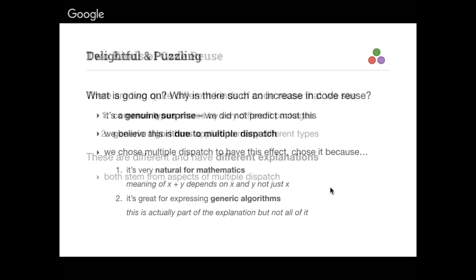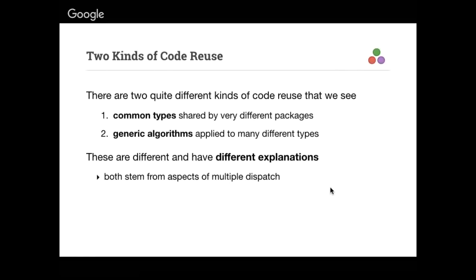We chose multiple dispatch pretty much because it was really natural for mathematics. When you write x + y, what that means depends on the type of x and the type of y — it doesn't really make sense to say the operation only belongs to x. It's also really nice for expressing generic algorithms, and that's actually the part we intended. But the first half of the talk covers the part that came out of nowhere. So there are two kinds of code reuse, and those are the two parts of the talk.